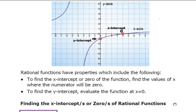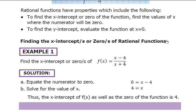We have to discuss the following rational function's properties. To find the x-intercept, or the zero, or the root of the function, we have to find the values of x where the numerator will be 0 — that is, we set the numerator equal to 0 and solve for x. For finding the y-intercept, we evaluate f(0), meaning we substitute x equals 0.